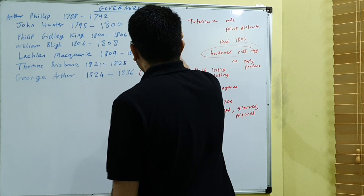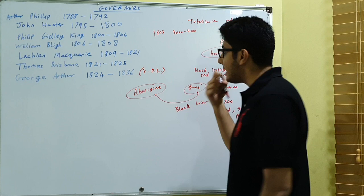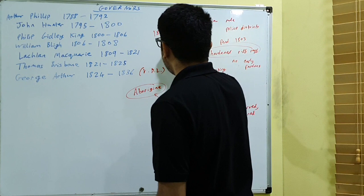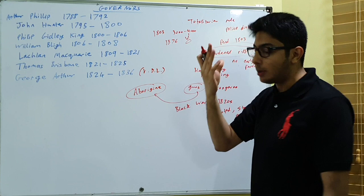In 1803, when the penal colony was established in Van Diemen's land, there were about 3,000 to 4,000 aborigines in the area. The last aborigine died in 1876. So the population was reduced to zero, the indigenous population.